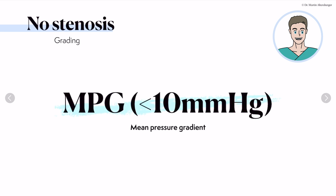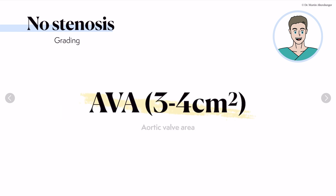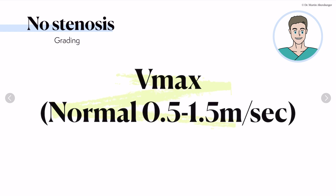Now let's talk about numbers. When no stenosis is present, the mean pressure gradient is below 10 mmHg — confirming no relevant stenosis. The aortic valve area, calculated with the continuity equation, is between 3 and 4 cm². There is also no stenosis present when the maximal velocity is around 1 m/s, overall in the range of 0.5 to 1.5 m/s.